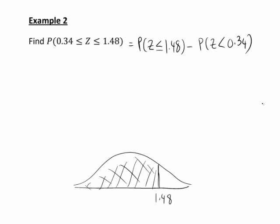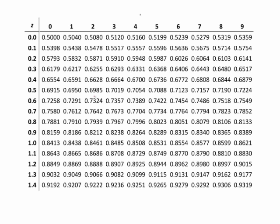For z equals 0.34: looking at 0.3 in the row and 4 in the second decimal place column gives us 0.6331. For z equals 1.48: note that the table shown here only goes down to 1.4 for convenience, but the full table goes to z equals 3.0 in most cases. Looking up 1.4 and going across to 1.48 gives a probability of 0.9306.